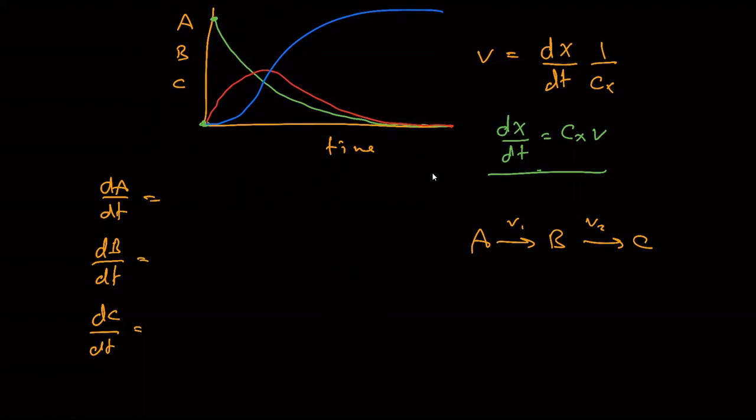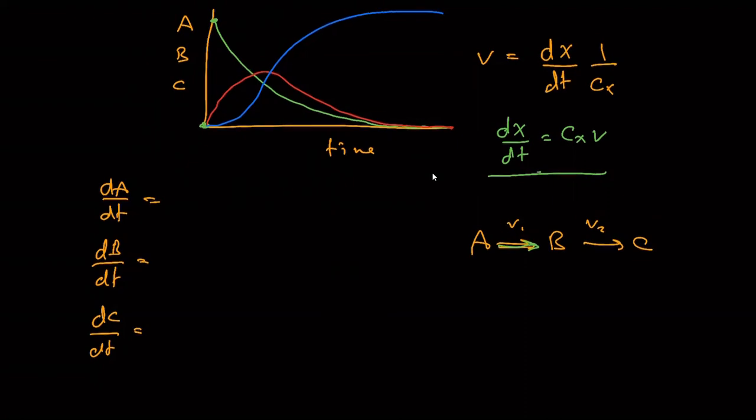So what's the rate of change of A? Rate of change of A, remember these are irreversible reactions. So A is just disappearing. Its stoichiometric coefficient, CA is minus one, because it's a reactant. And that means DA by DT is minus V1. So it's just telling us that A is disappearing at a rate V1.